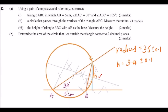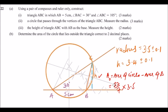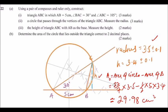Part B: determine the area of the circle that lies outside the area of the triangle, to two decimal places. The area outside equals area of circle minus area of triangle ABC. Since we have the radius, area of circle = π × r² = (22/7) × 3.5² minus one-half × base × height = (22/7) × 3.5² − (1/2) × 5 × 3.4. Working that out, the area of the circle outside the triangle is approximately 29.98 cm².